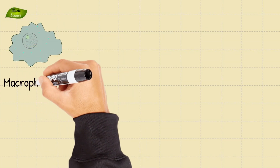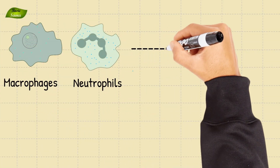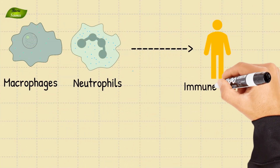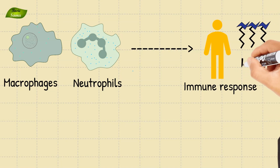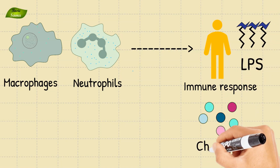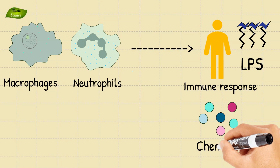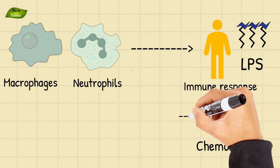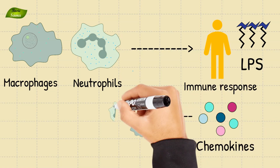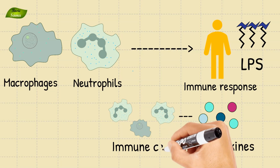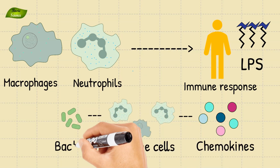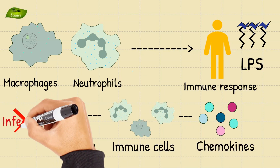Macrophages and neutrophils, crucial players in the immune response, are activated in response to LPS signaling. Chemokines produced as a result attract these immune cells to the site of infection, where they phagocytize bacteria and contribute to the clearance of infection.